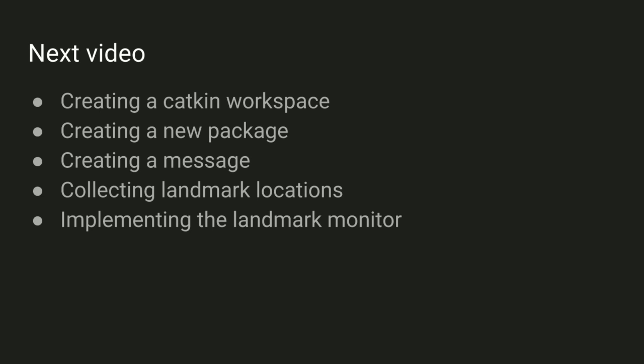Okay, so we're actually going to do all of the coding in the next video, just to try and keep the videos a little bit shorter. So in the next video, we'll see how to create a catkin workspace. This is how you build ROS code. We'll create a ROS package. We'll create our own message type, and we'll see how to gather all the landmark locations and implement a monitor that tells us when the robot is close to one of those landmarks.